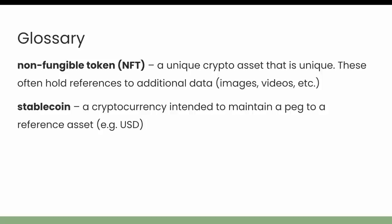Stablecoins are a cryptocurrency intended to maintain a peg to a specific reference asset — for example, USD-pegged stablecoins, ones pegged to the euro or the pound, or even stablecoins pegged to commodities. These maintain their peg in one of two major ways. There are asset-backed stablecoins, which are claimed to be backed by a pool of assets one-to-one with the number of tokens in circulation — you could exchange one stablecoin token for one US dollar. Names like Tether or USDC are both asset-backed stablecoins.